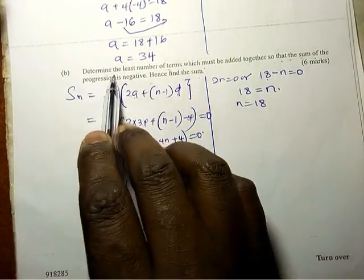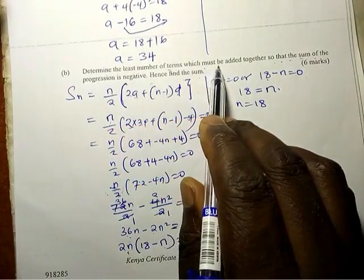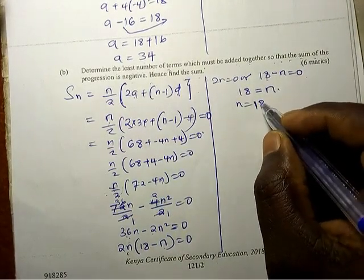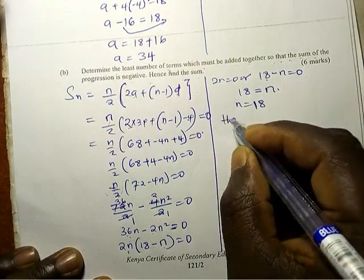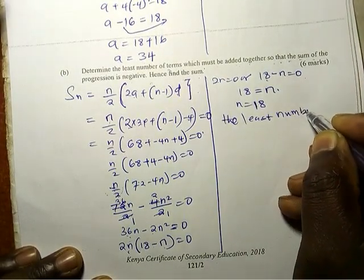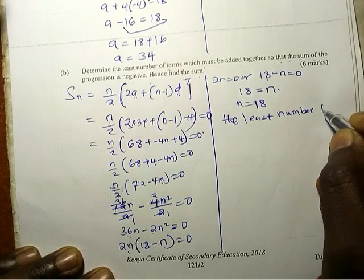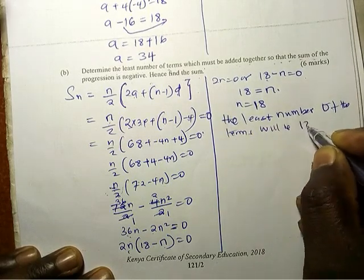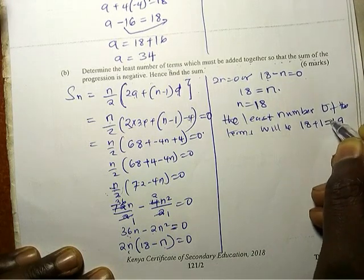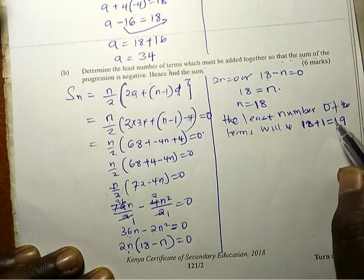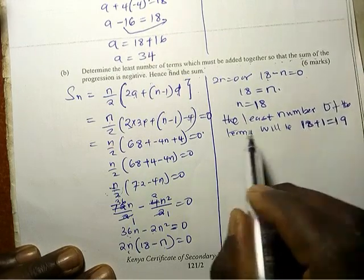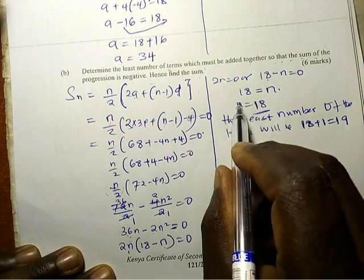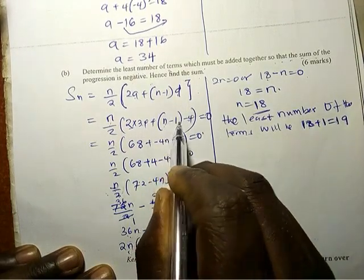So determine, the question was determine the least number of terms that must be added together so that the sum of them is negative. So 18 is the term, it is the value of n. So the least number of the terms will be 18 plus 1, which is equal to 19. Do you know the reason why we are adding 1? Remember n minus 1. The least number is 18, so n minus 1 we are going to get 18. So that is why 19 minus 1 will give us 18.